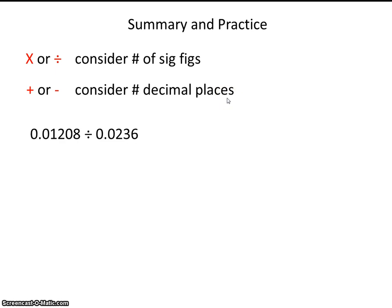Alright, so using your calculator, type in this calculation. And then record it to the correct number of sig figs. Go ahead and pause the video now. Okay, I see that this number has 1, 2, 3, 4 sig figs, and this number has 1, 2, 3 sig figs. So the fact that this number has 3 sig figs limits us to an answer with 3 sig figs.